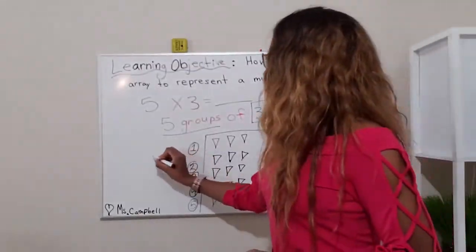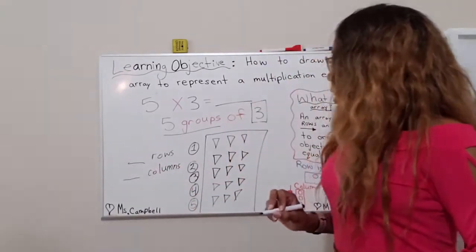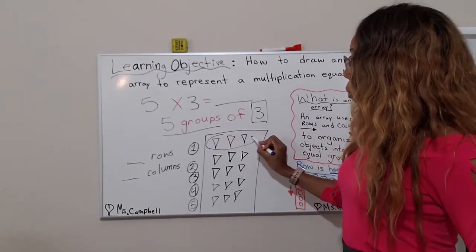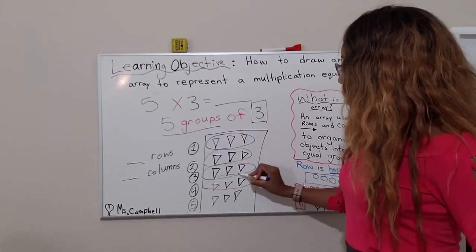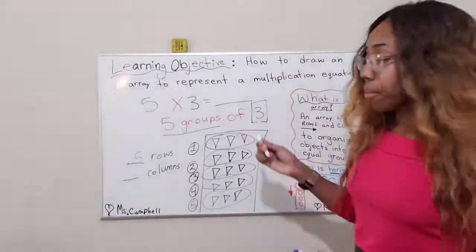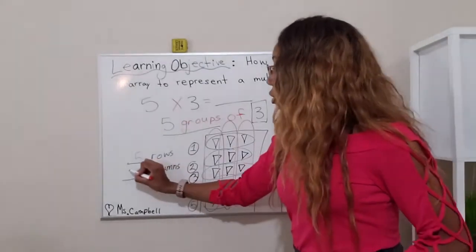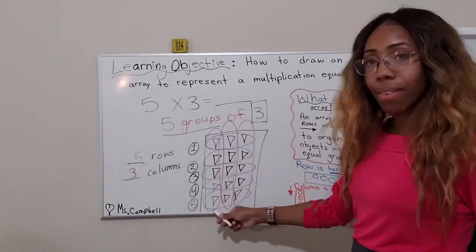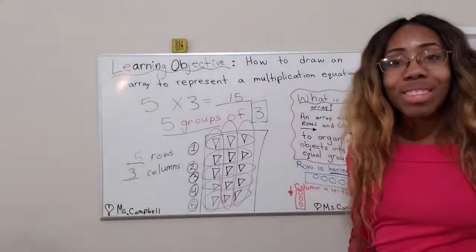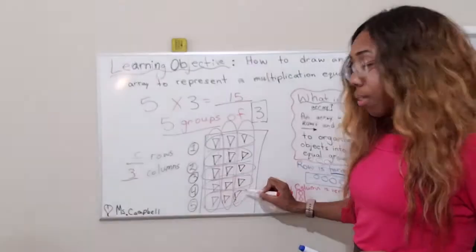Now let's count how many rows and how many columns. How many rows? Going across: one, two, three, four, five — there are five rows. How many columns? One, two, three — there are three columns. So five times three: five, ten, fifteen. Or count by threes: three, six, nine, twelve, fifteen. Five times three equals fifteen.